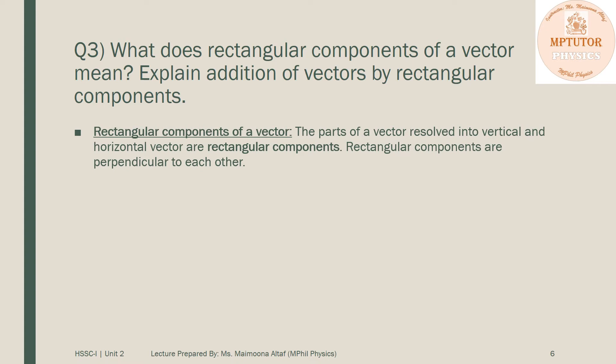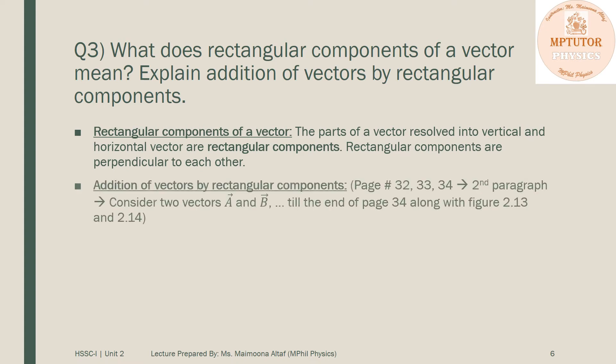After this, you have to explain addition of vectors by the rectangular components method. The answer is in your book on pages 32, 33, up to 34. You have to start from the second paragraph: 'consider two vectors a and b' till the end of page number 34. You also have to draw the figures given on these pages, figures 2.13 and 2.14.